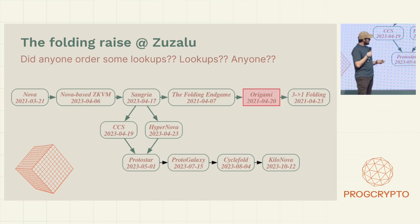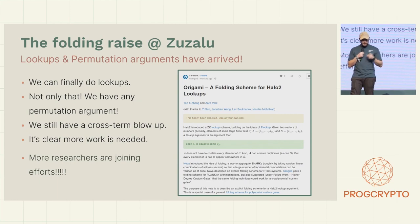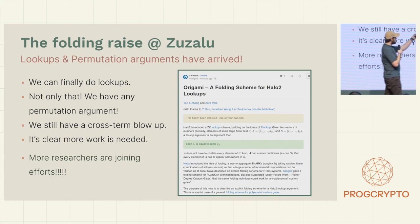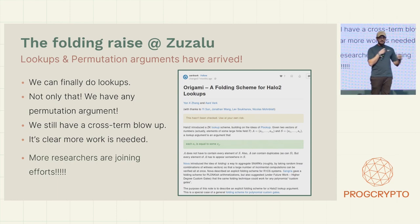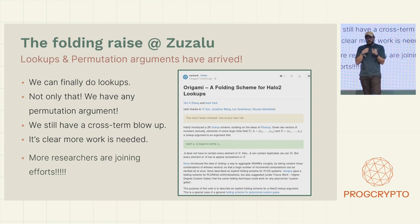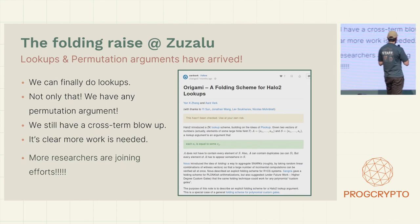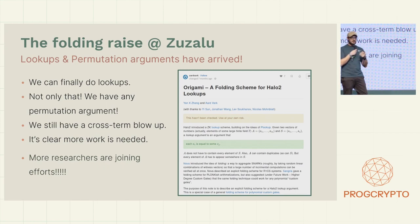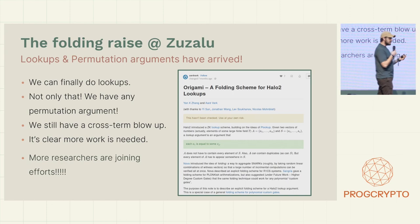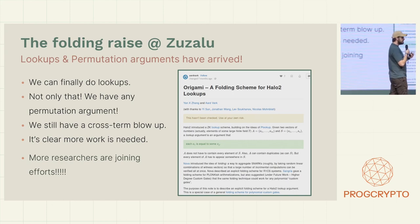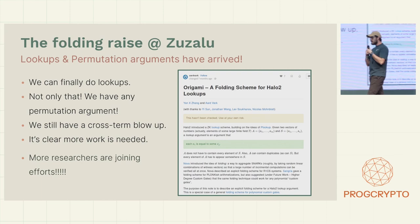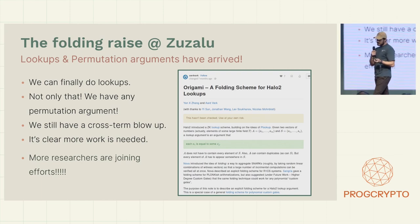Not so long after that, Adbarg and Jan came up with Origami, which is basically a scheme that allows you to have lookups inside of folding — which is what we were asking for. Still, we were having the same issue: we have these cross-terms which are blowing up the entire thing. If you have few lookups it's fine, but when the lookup arguments start to get big, you have a lot of columns and you need to permute a lot of stuff, and the thing gets messy.